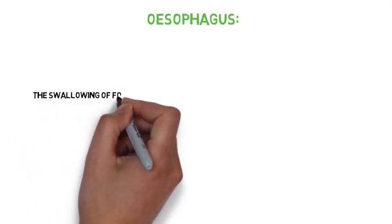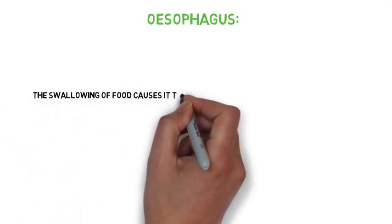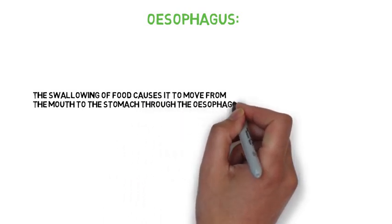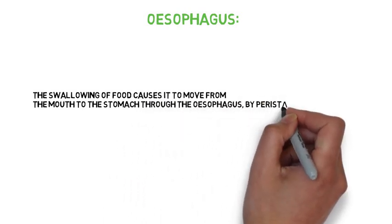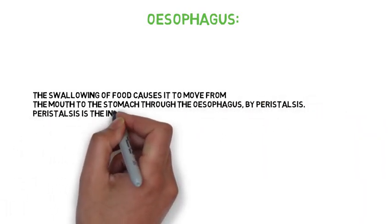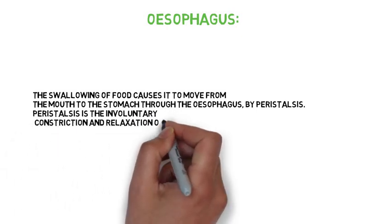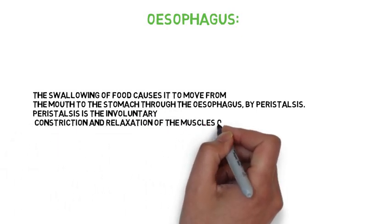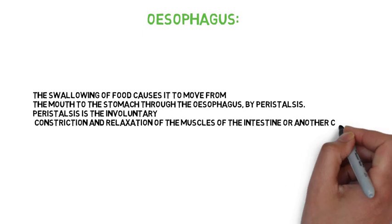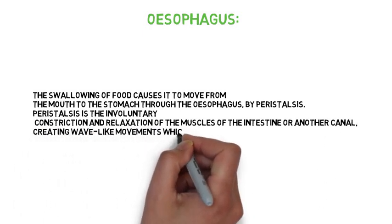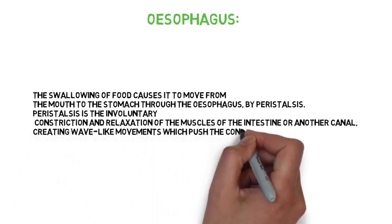The swallowing of food causes it to move from the mouth to the stomach through the oesophagus by peristalsis. Peristalsis is the involuntary constriction and relaxation of the muscles in the intestine or another canal, creating wave-like movements which push the contents of the canal forward.